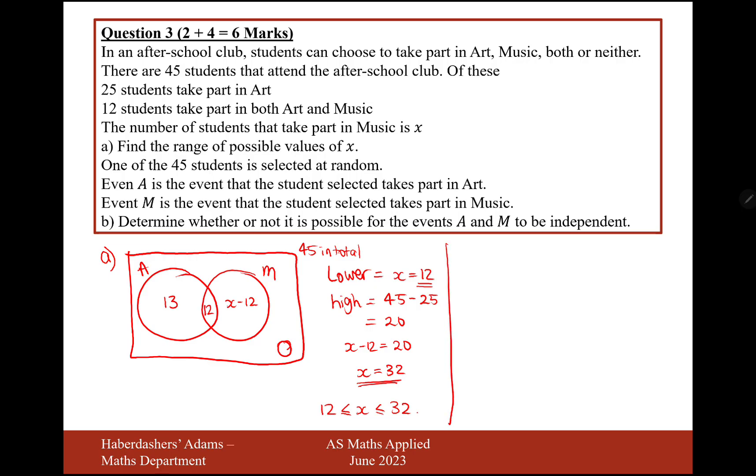One of the 45 students is selected at random. Event A is the event that the student takes part in art. Event M is the event that the student takes part in music. Determine whether or not it is possible for the events A and M to be independent.